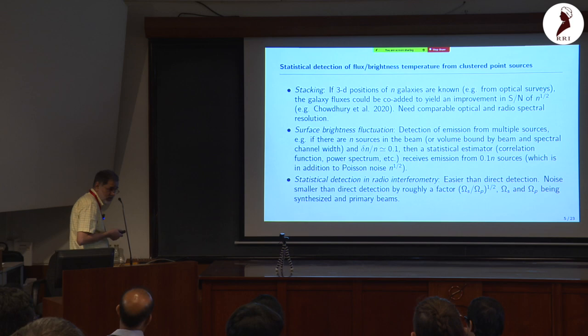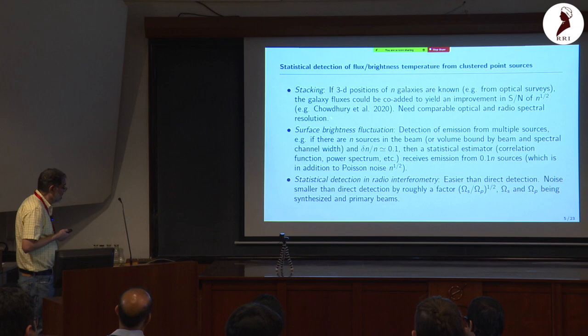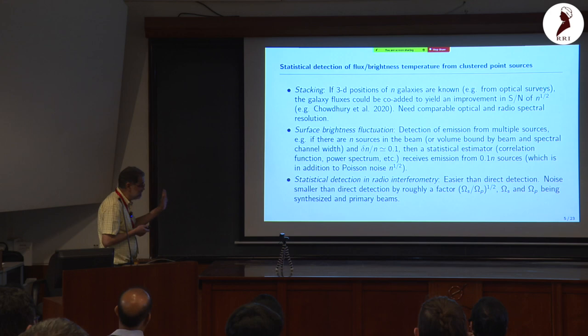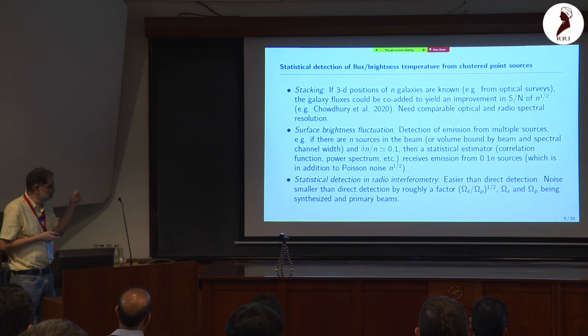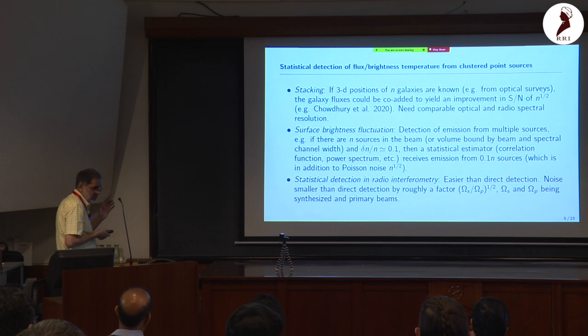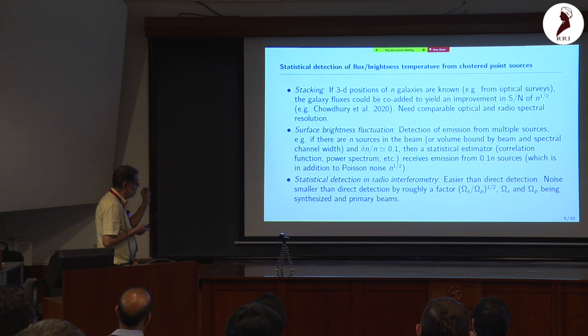The rest of my talk covers three detection methods, all of which have succeeded — and that was partly my motivation for giving this talk. The first method is stacking. This is fairly straightforward: if you know the 3D positions of your galaxies from an optical survey, you can align and stack the HI signal. I'll discuss one optical survey — DEEP2 — in some detail.